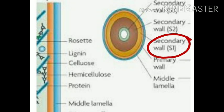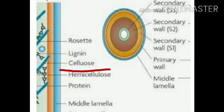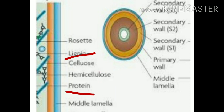The cell wall is made up of polysaccharides called cellulose, hemicellulose, pectin, lignin, suberin, etc. And it shows some characteristics like plasmolysis and deplasmolysis.